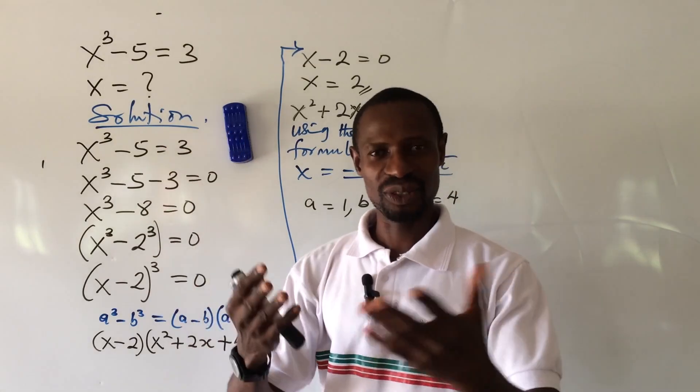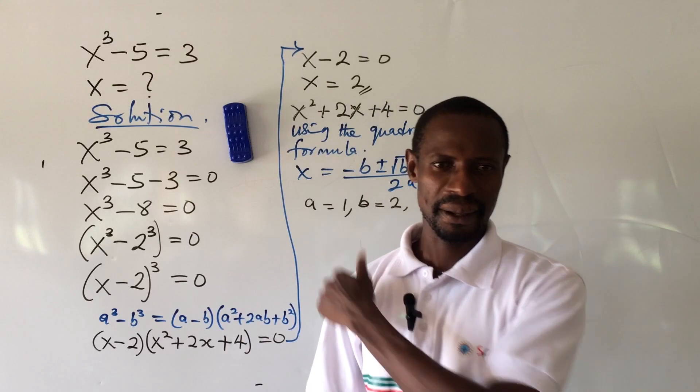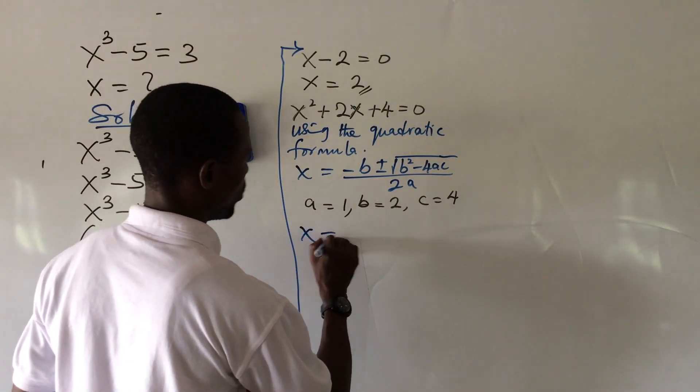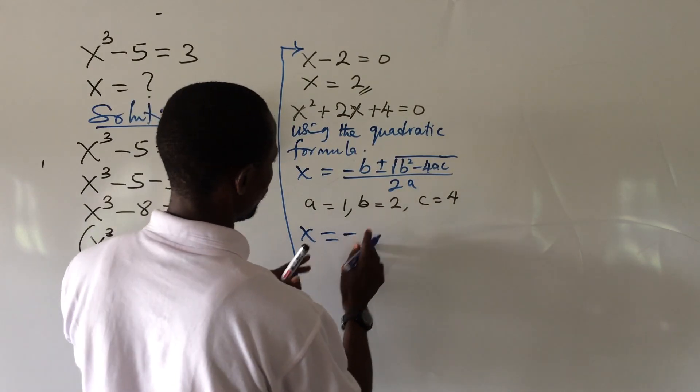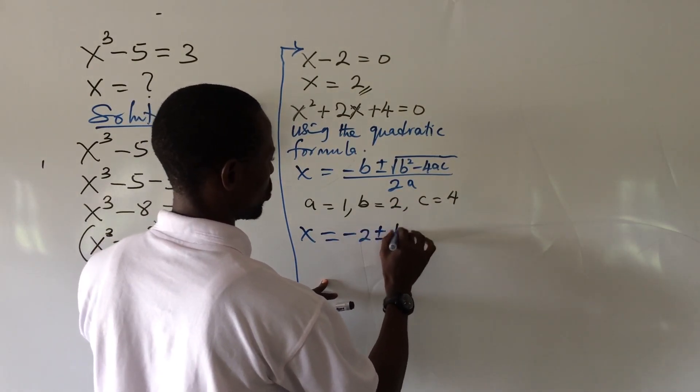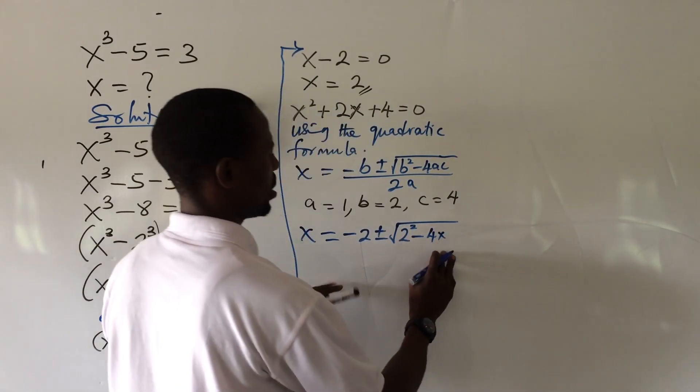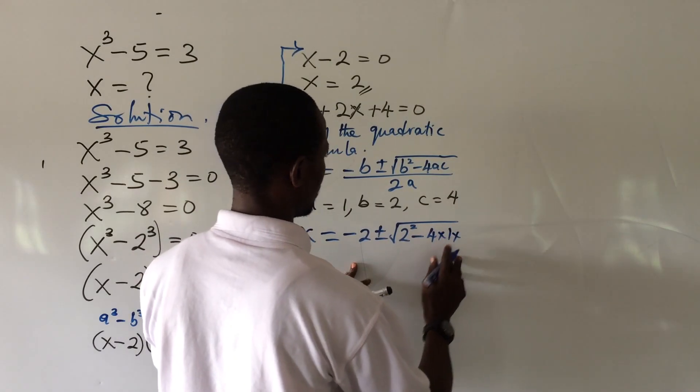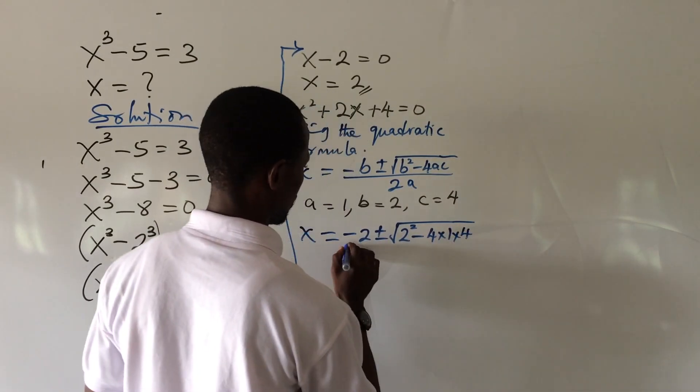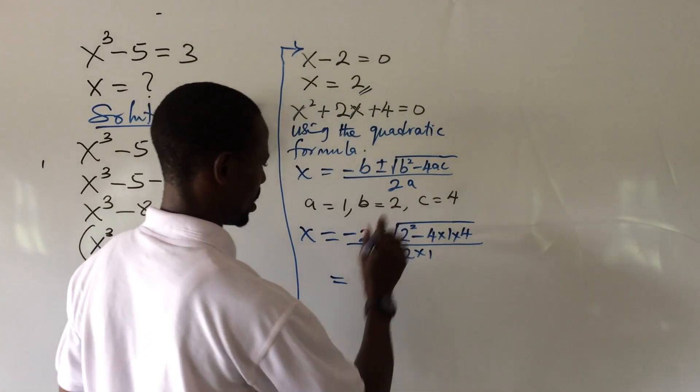So let's go back to the board again. So here we're going to have x equal to minus b is 2 plus minus the square root of 2 squared minus 4 times a which is 1 times c which is 4, all over 2 times 1.